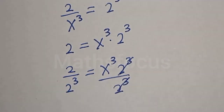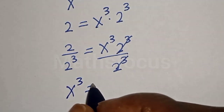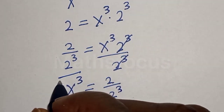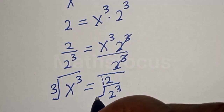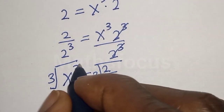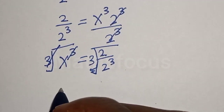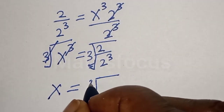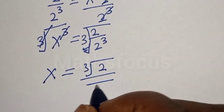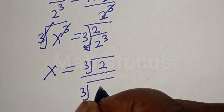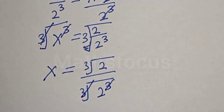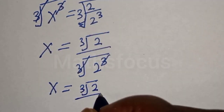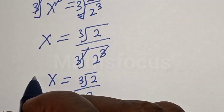This one will cancel this. Therefore s raised to the power 3 is equal to 2 divided by 2 to the power of 3. Let's take the cube root of both sides. Then this one will cancel this. S will be equal to the cube root of 2 over the cube root of 2, and that is our final answer: cube root of 2 over 2.